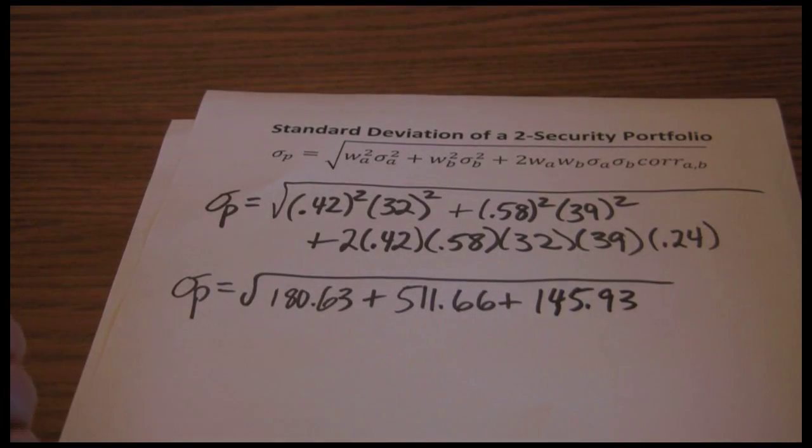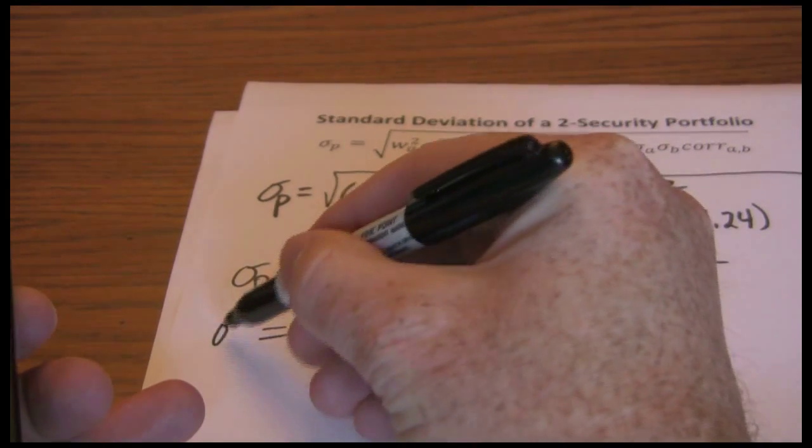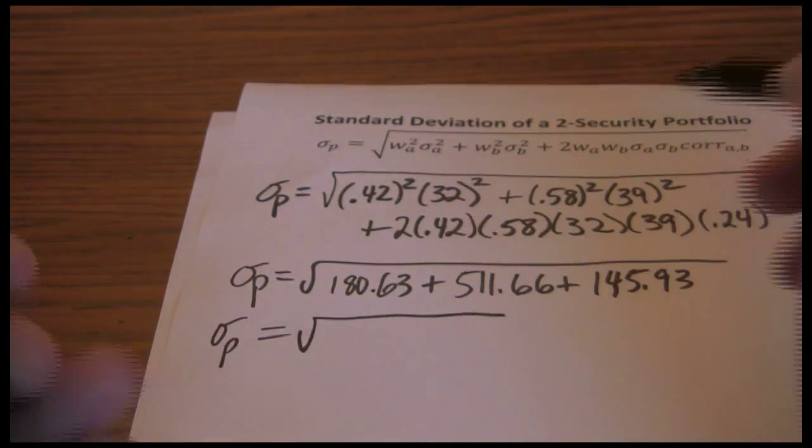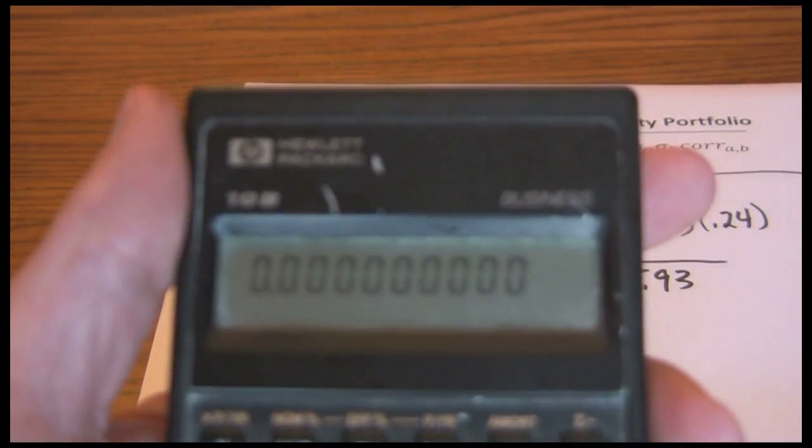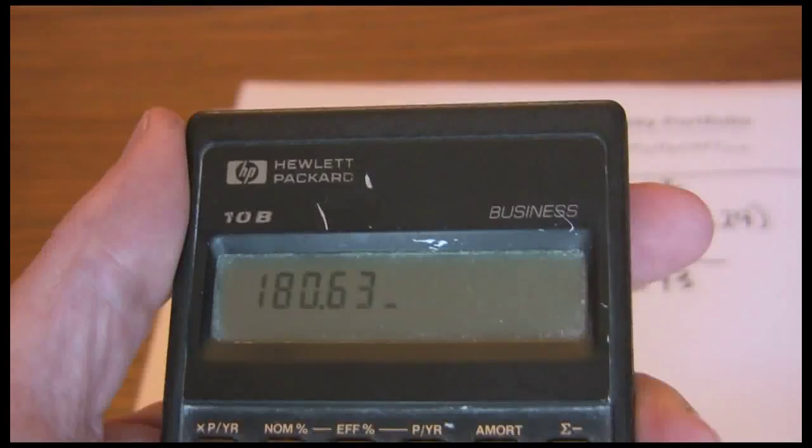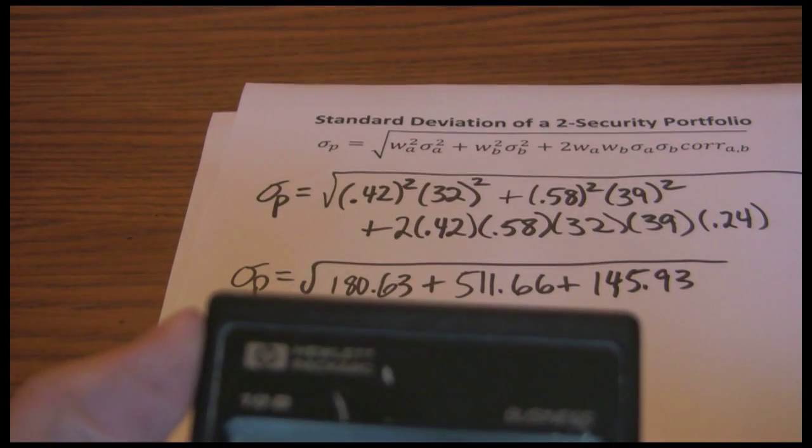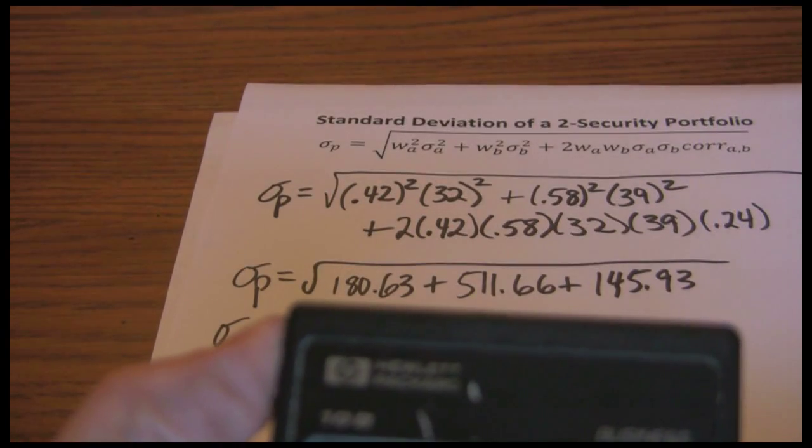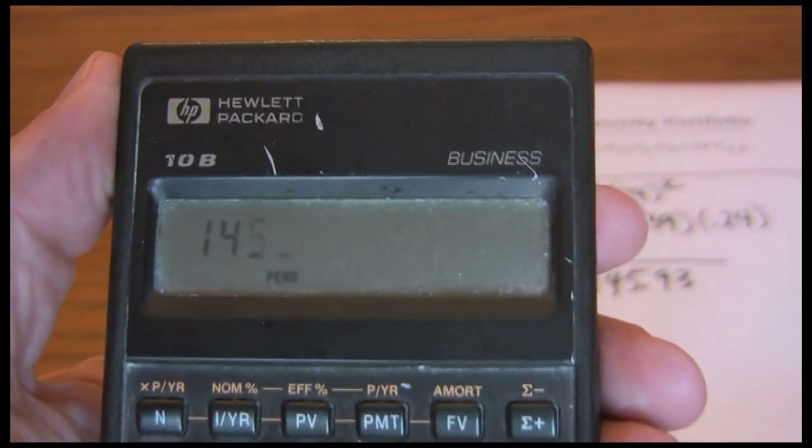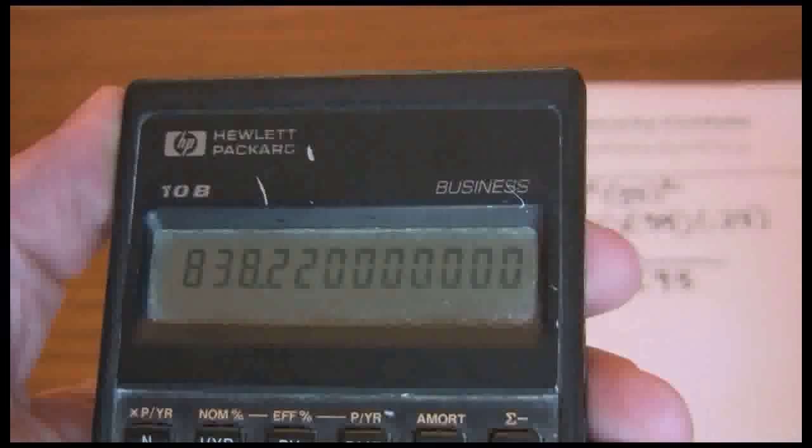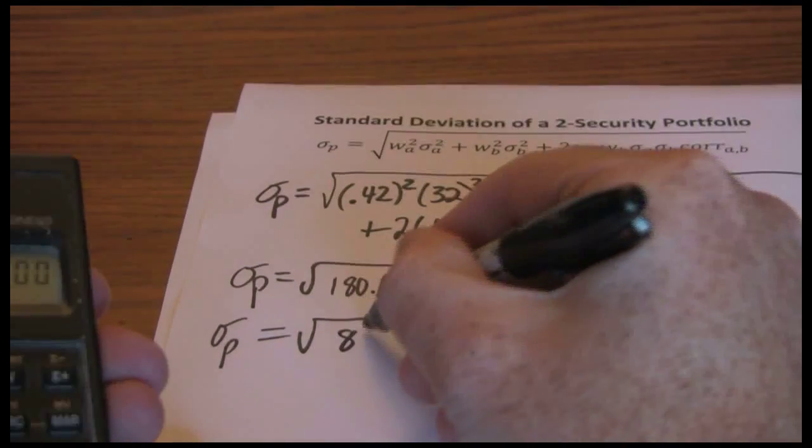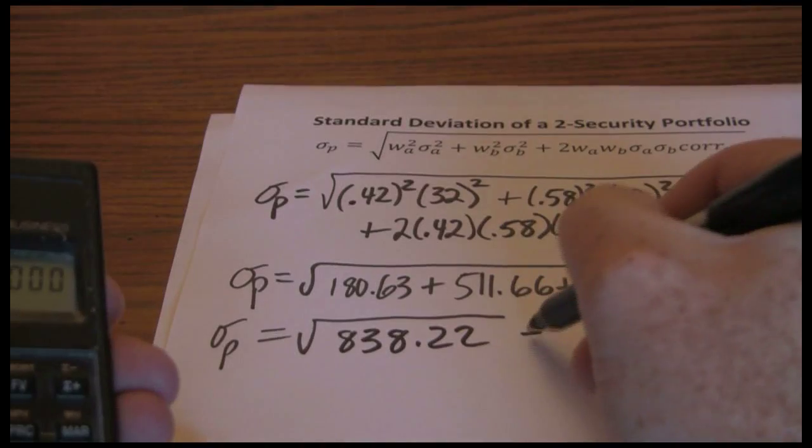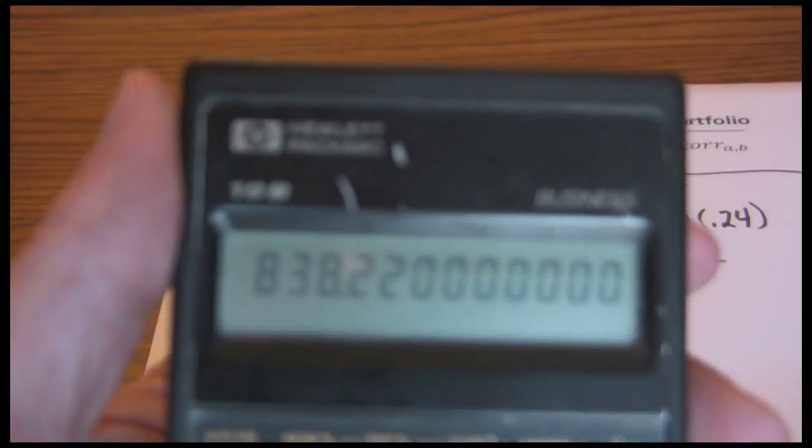And now I just want to add those up. 180.63 plus 511.66 plus 145.93 gives me 838.22. And now the last thing is to take the square root. 28.95%.